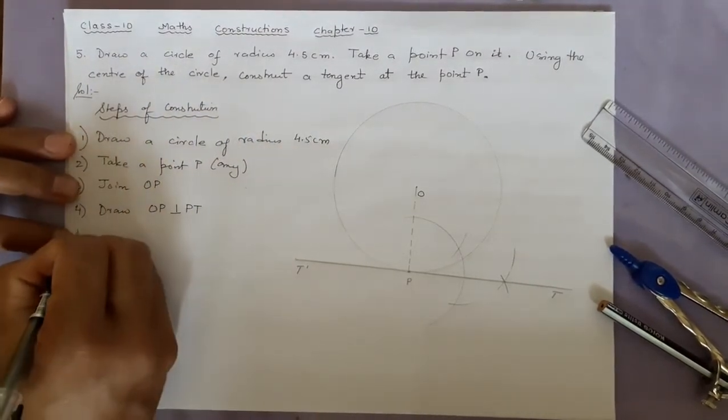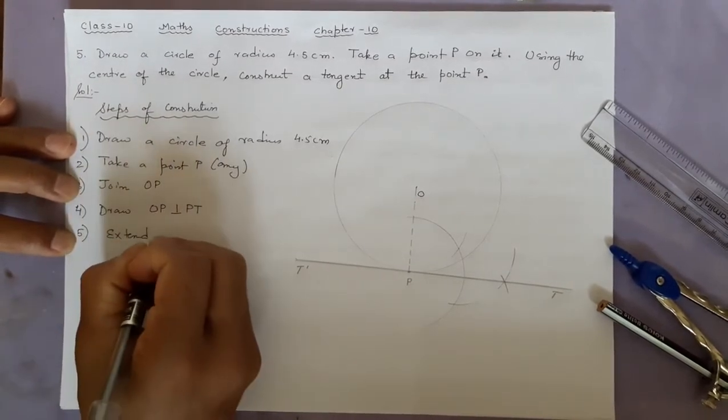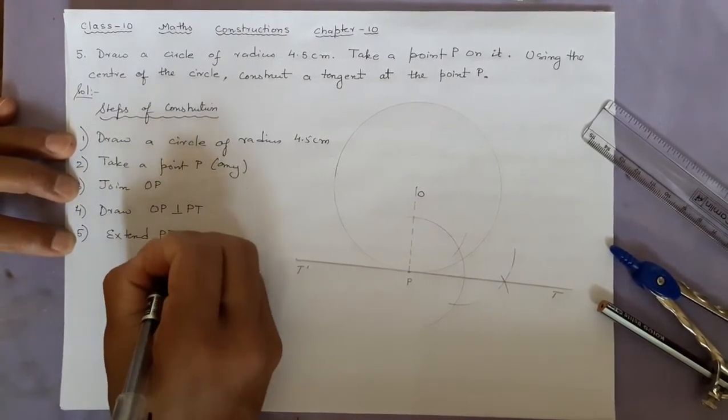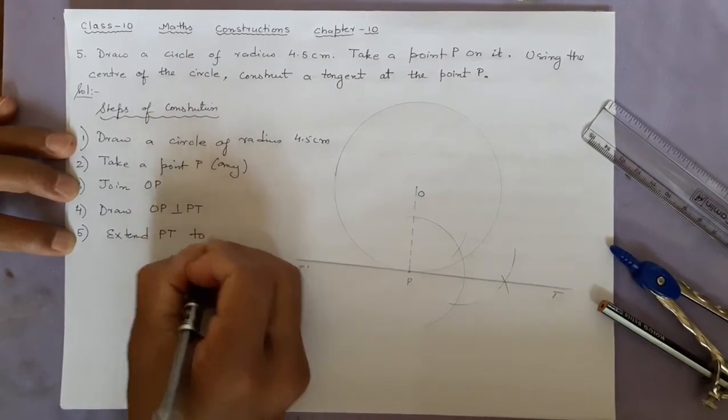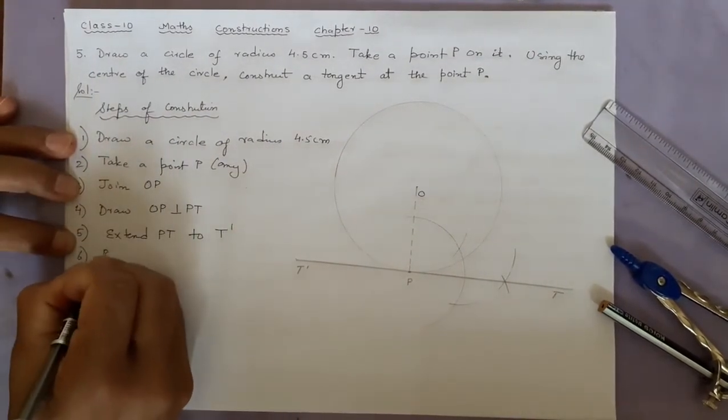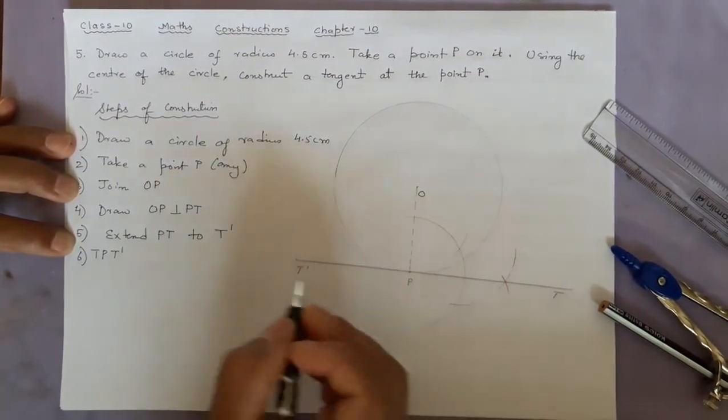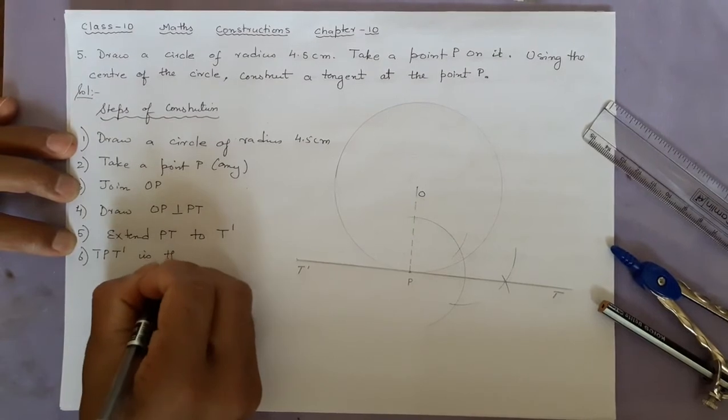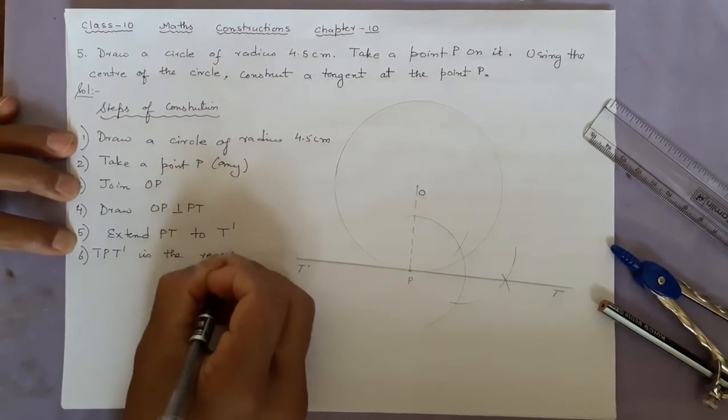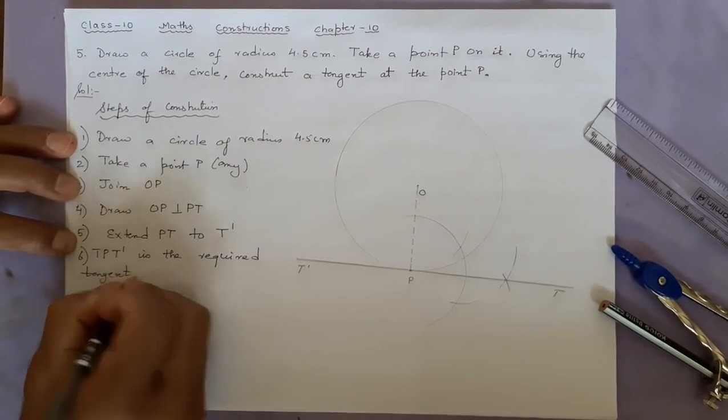Number 5: Extend PT to T dash. TT' is the required tangent.